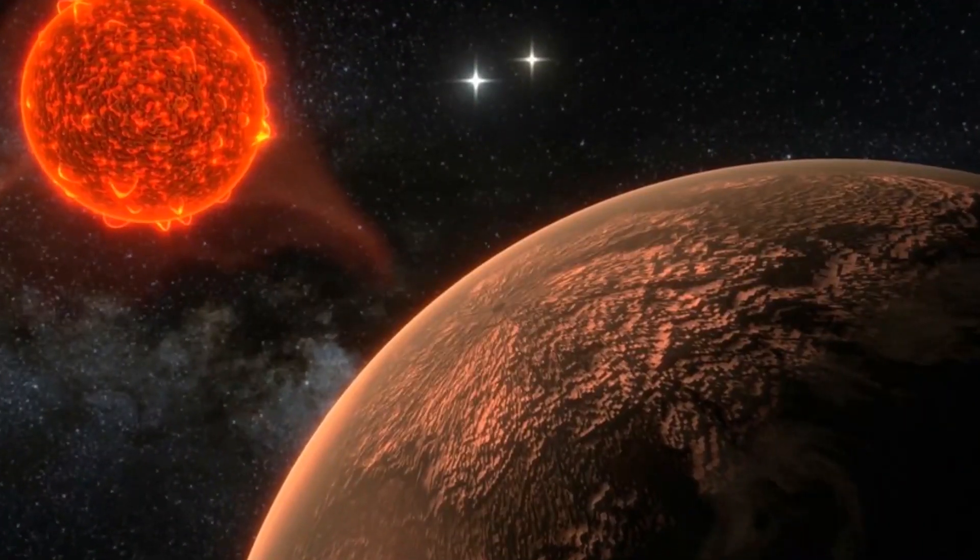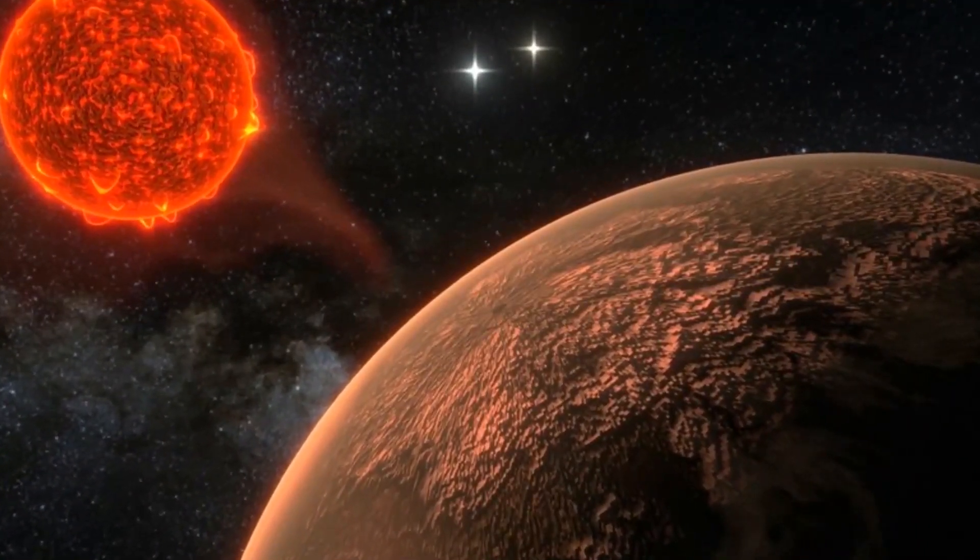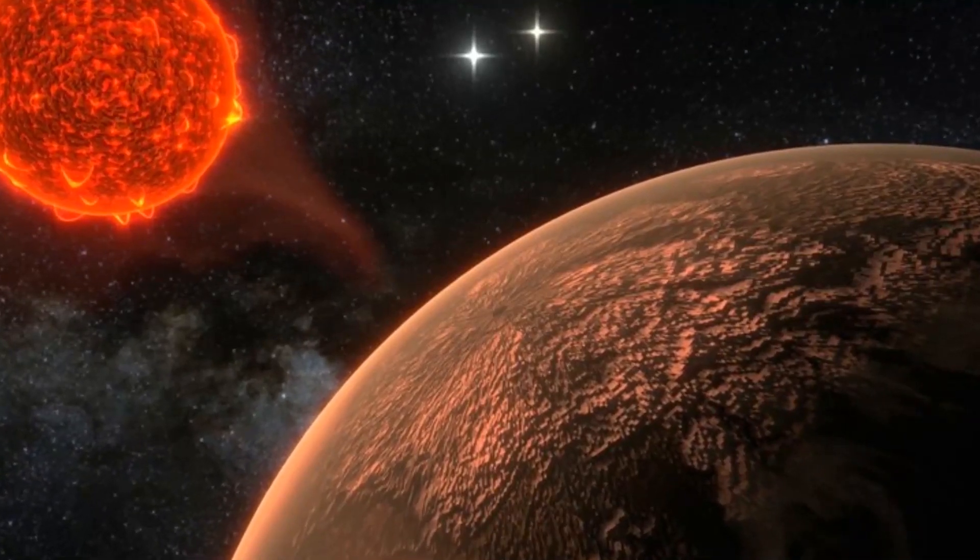Interestingly, Proxima Centauri b receives about the same amount of solar energy from its star that Earth does from our sun. So theoretically, Proxima Centauri b could have water on its surface. It could be habitable, but of course, we don't yet know all the details about the habitability of exoplanets.